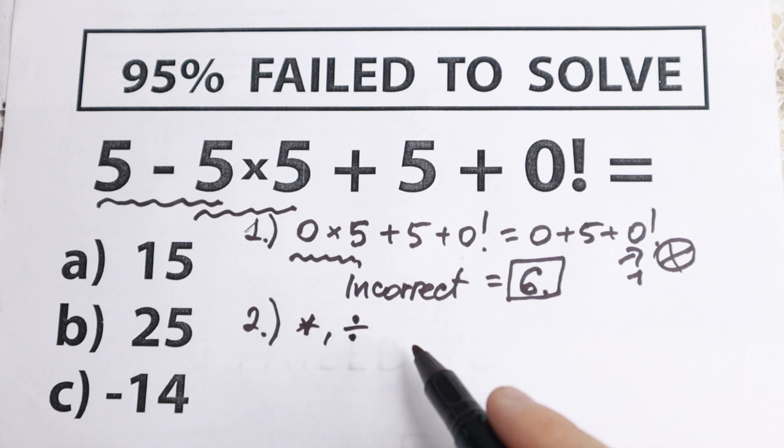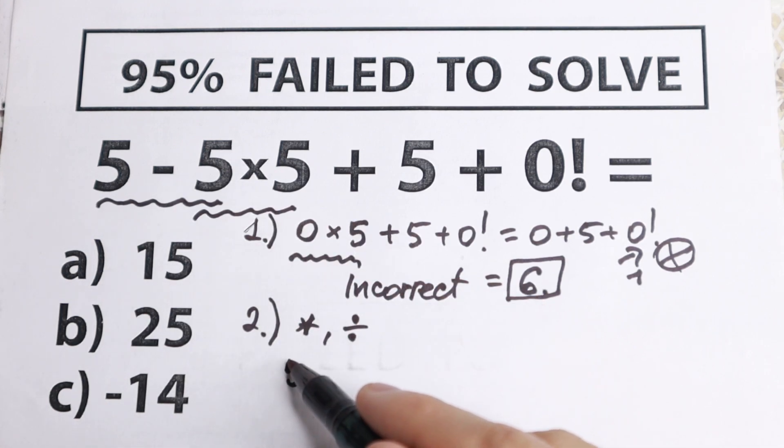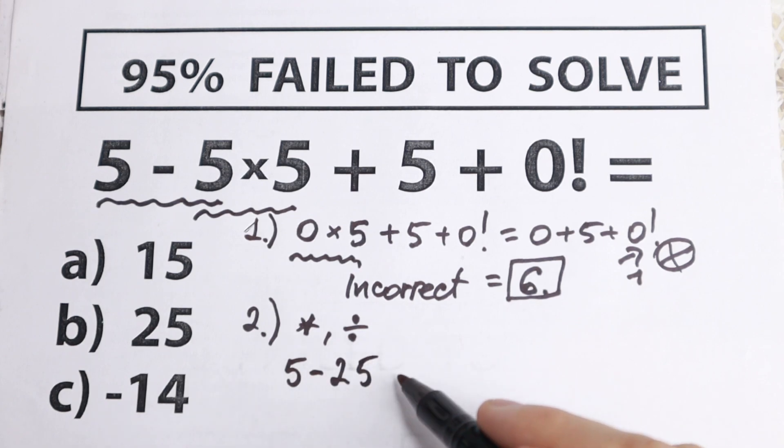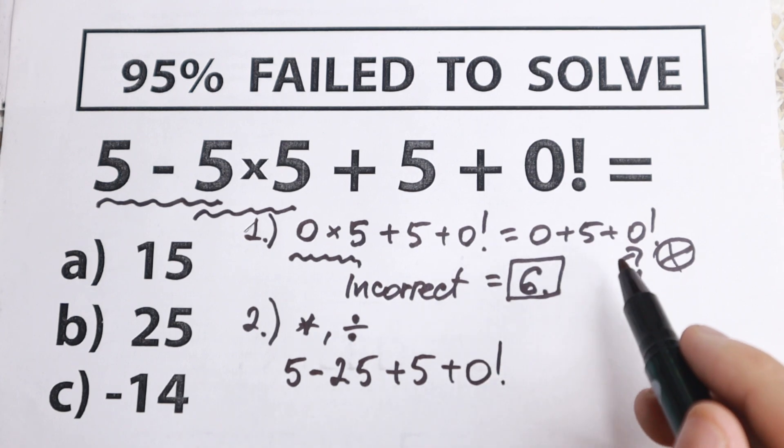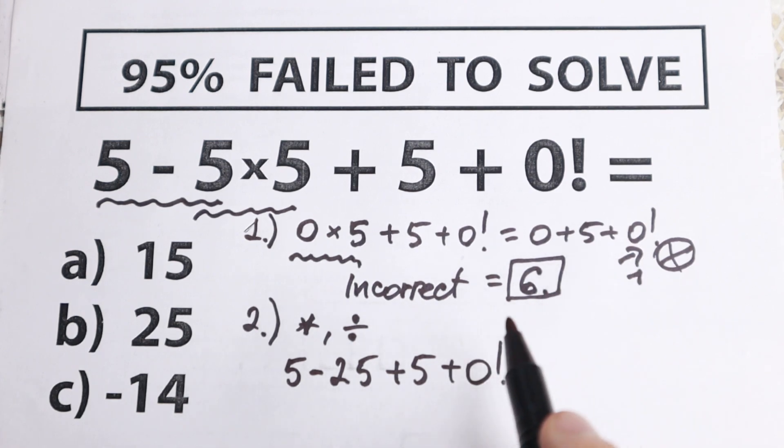If we multiply 5×5, we need to start with this. When we start with multiplication, we have 5 - 25 + 5 + 0!. We start with multiplication and division—this is the correct method when you don't have any parentheses.